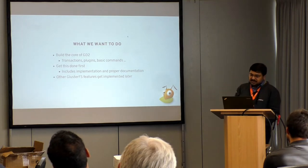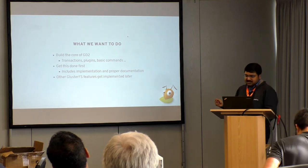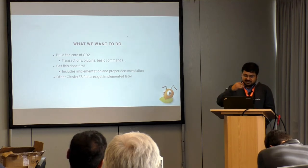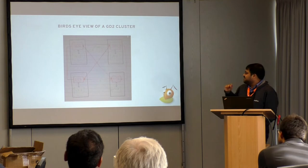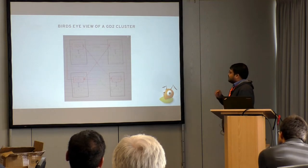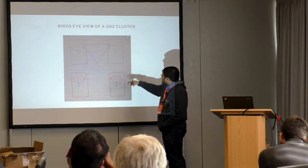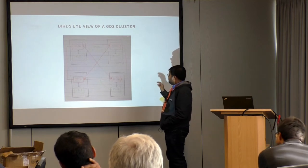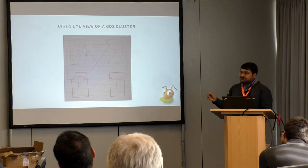I want to get these basic core features implemented and have proper documentation for others to refer to when they begin implementing their features. This is the bird's-eye view of the GlusterD 2 cluster. It looks really similar to the old one, except that now the store is replaced by etcd. etcd forms its own mini-cluster inside our larger cluster, and GlusterD speaks with etcd to do the store. We are offloading all of our store management to etcd, and that removes a whole lot of code from GlusterD.